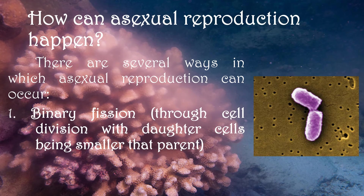How can asexual reproduction happen? There are several ways in which asexual reproduction can occur. The first one is through binary fission. This happens by cell division, meaning the parent cell divides itself into two daughter cells. The downside is that the daughter cells are usually smaller in size than the parent cell. An example of living things that undergo binary fission are bacteria.